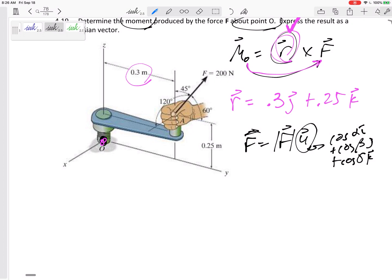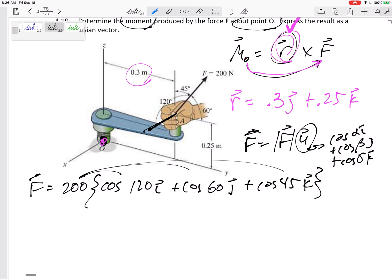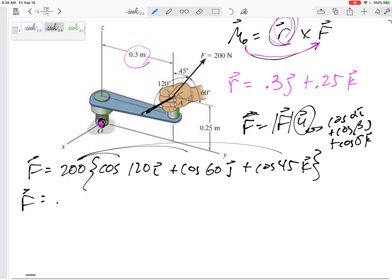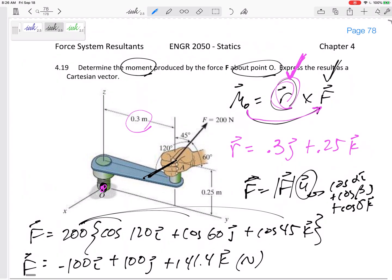This is going to be 200 times cosine - the angle to x is going to be 120 degrees in the i, cosine 60 degrees from the j, 45 from the k. So multiply that through and I would get this force: negative 100, positive 100, 141.4 units newtons. All right, and so that right there is my force.